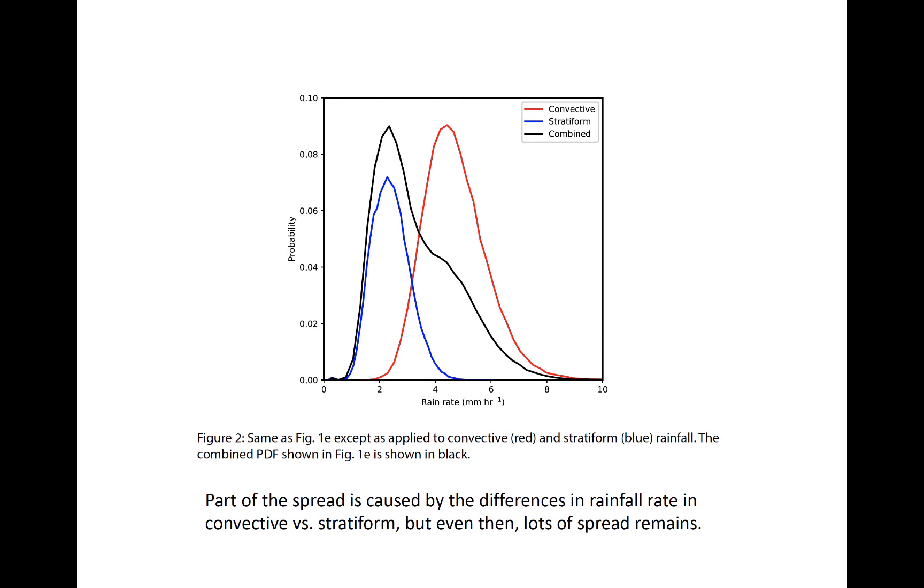Moderate reflectivity, such as around 30 dBZ, is frequently observed in both types of rainfall regimes, whereas low reflectivity, say less than 20 dBZ, is more often found in stratiform, while very strong reflectivity, say in excess of 40 dBZ, is generally found in strong convection.